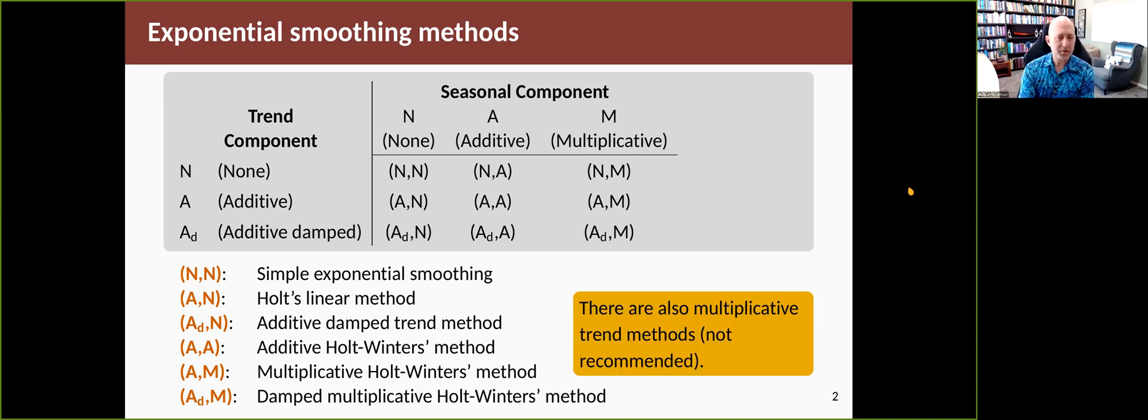There are also multiplicative trend methods that you can fit in the fable package and are discussed in some books, but we don't recommend them because they tend to give poor forecasts. We don't use them or allow them to be used by default in the fable package.